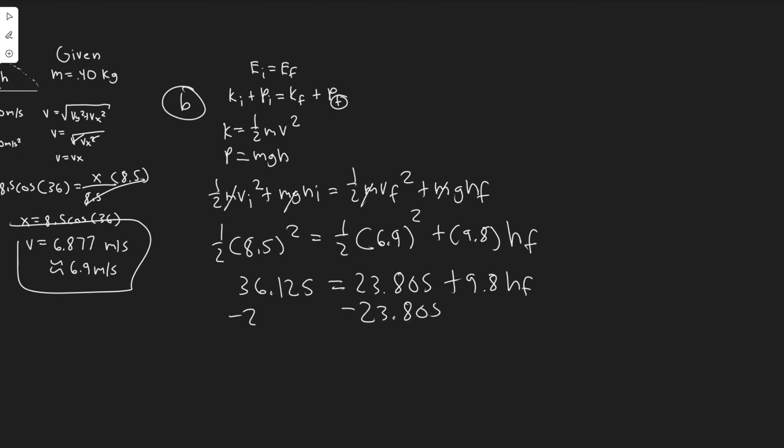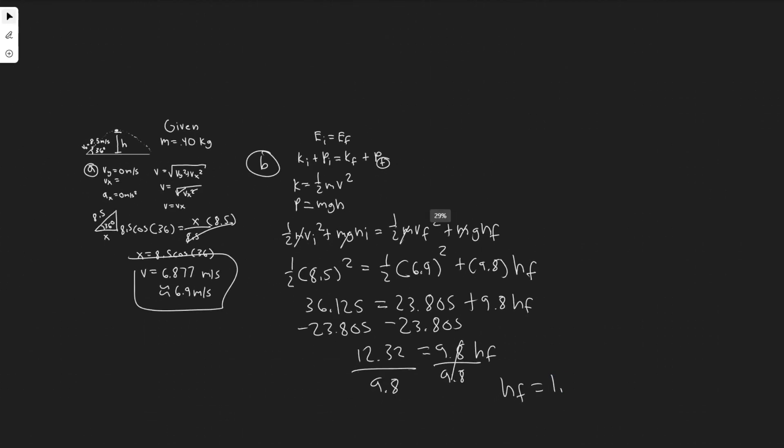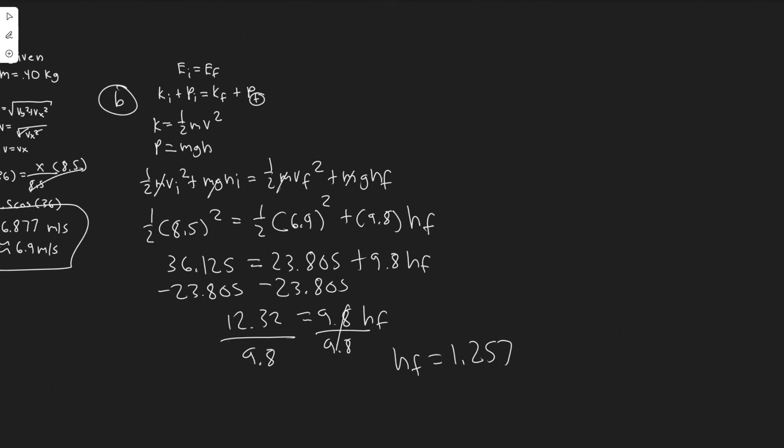If I minus this from both sides, 36.125 minus 23.805 is 12.32 equals 9.8 h_f. Dividing by 9.8 will give you 1.257. So h_f equals 1.257 meters since we're using meters per second, our distance would be in meters. You can round to 1.3 or however you would like to round. So it's about 1.3 meters is going to be our height. This distance right here which is its maximum height is 1.3 meters.